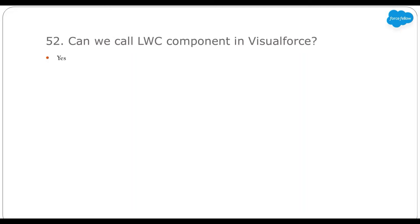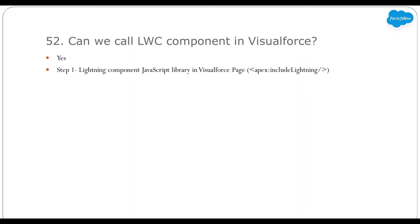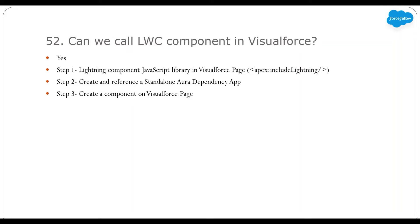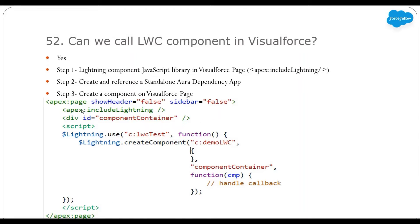How we can call LWC in Visualforce pages is a three-step process. First, we need to add the Lightning Component JavaScript library in the Visualforce page. Second, we need to create and reference a standalone Aura dependency app, and in that dependency we need to define our LWC component — so directly we can't use an LWC component in Visualforce, but with the help of an Aura dependency app we can. At last, we need to write JavaScript code to call the LWC component. You can see here: apex:includeScript for lightning imports the JavaScript library, and this div is the container where we want to load our LWC component.